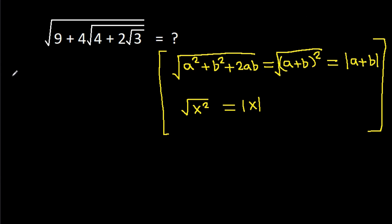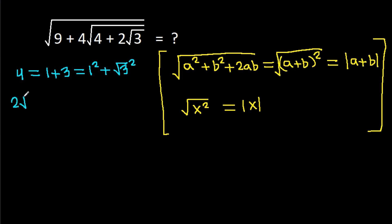Here, 4 is equal to 1 plus 3, which equals 1 squared plus (√3) squared, and 2 times √3 equals 2 times 1 times √3.